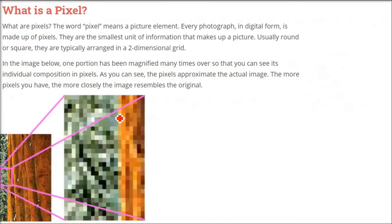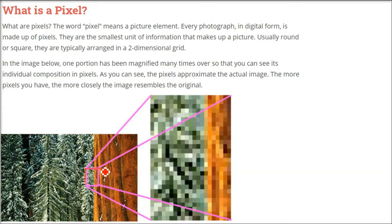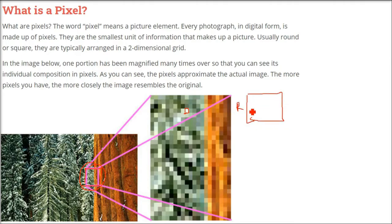A pixel is the smallest unit of a digital image or graphic that can be displayed on any digital display device — AMOLED, TFT, CRT — all have picture elements. Pixels are combined to form a complete image, video, text, or any visible thing on a computer display. 'Pixel' comes from 'picture element' — 'pix' from picture, 'el' from element. Pixels are arranged in a two-dimensional grid (X and Y axes). The more pixels you have, the better the image quality — HD and Full HD are basically more pixels shown in a particular area.